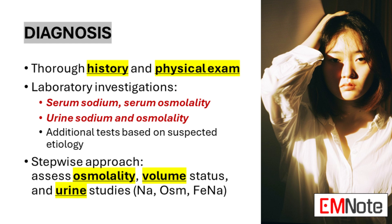Diagnosis. Diagnosing hyponatremia requires a comprehensive approach that combines clinical assessment with laboratory investigations. A thorough history is essential, focusing on medication use — especially diuretics — underlying medical conditions such as congestive heart failure, cirrhosis, or renal disease, and recent events that might affect fluid balance, such as gastrointestinal losses or excessive fluid intake. The physical examination should pay particular attention to assessing the patient's volume status, as this can provide crucial clues about the underlying etiology.